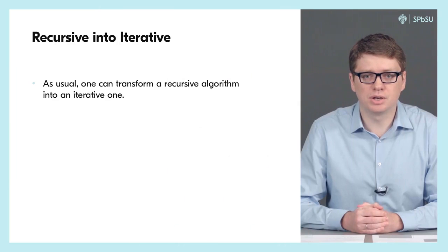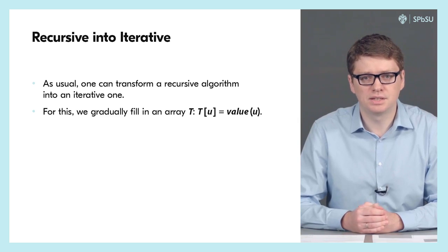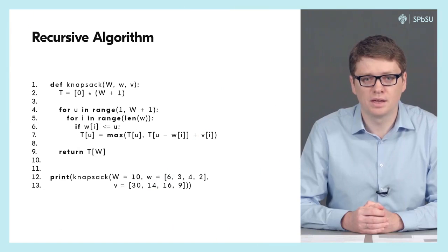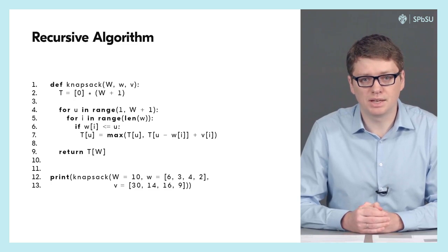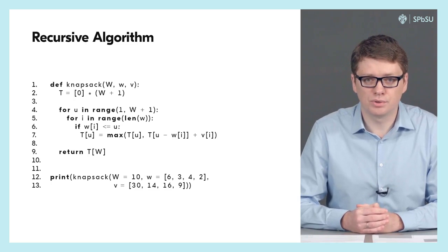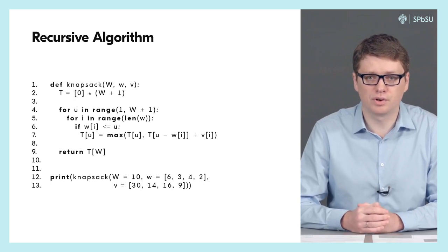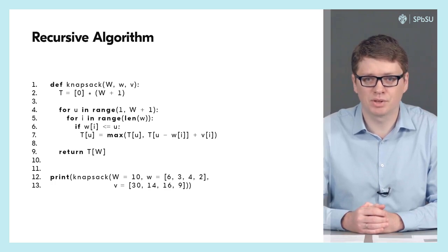It is usually possible to transform a recursive algorithm into an iterative one. In this case it is particularly easy, since we need to solve all sub-problems for U ranging from zero to W, which we can do in a straightforward fashion by gradually increasing U, using just an array to store all the values. What you see here is the corresponding iterative implementation of the same algorithm, using an array T of size W+1 and computing T[U] for U ranging from one to W using the same recurrence relation.